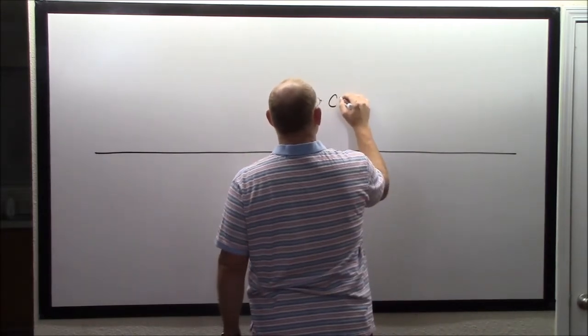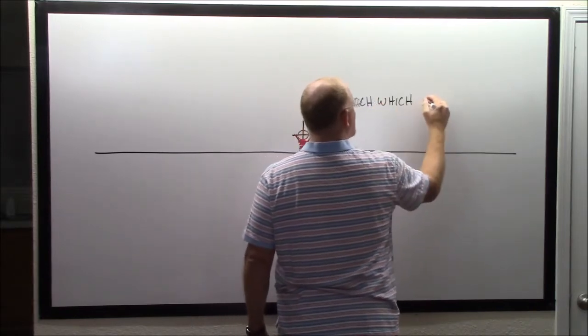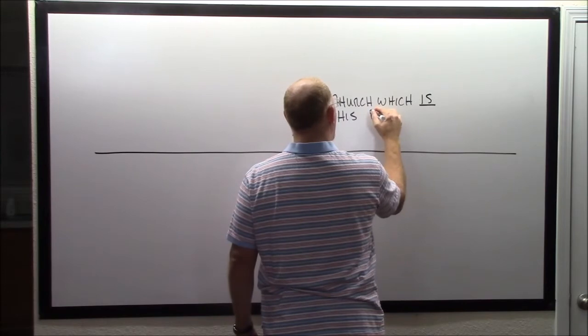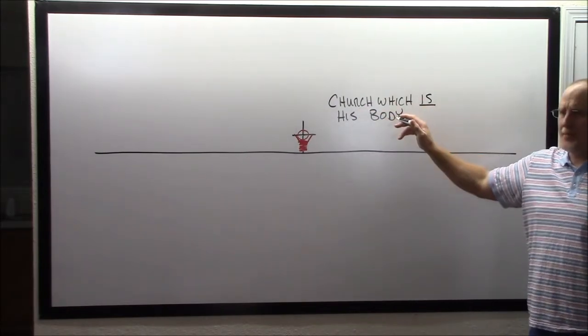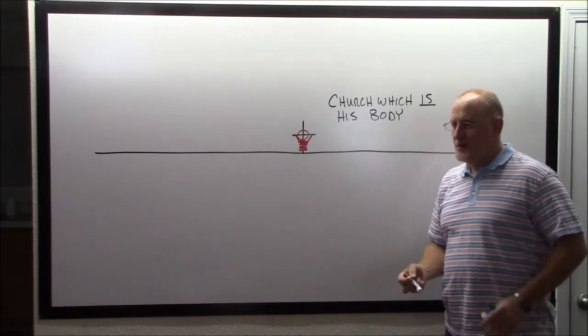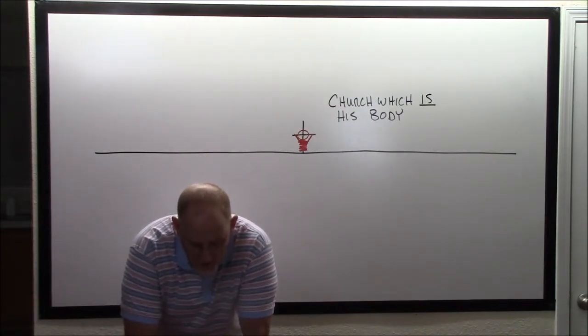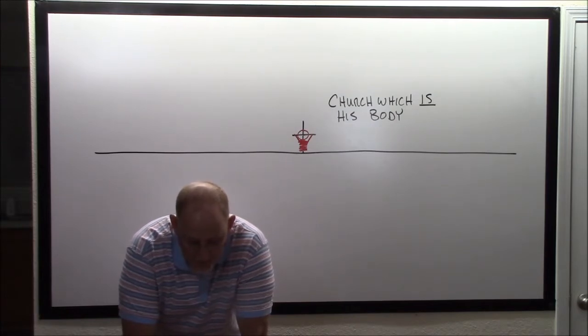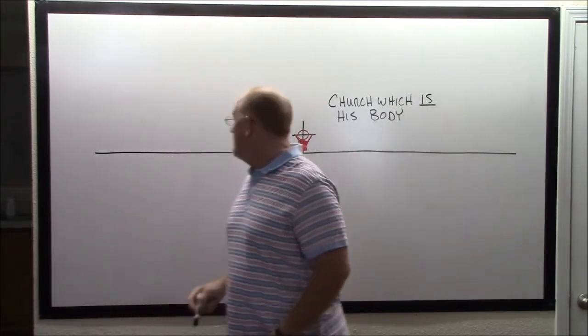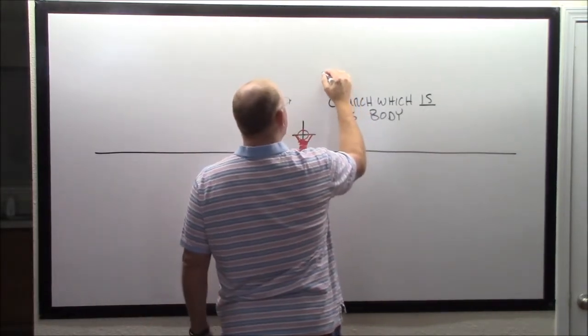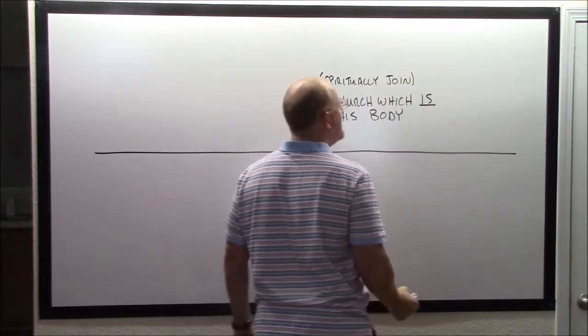Verse 29: No man ever yet hated his own flesh. When does the wife become the flesh, the own flesh of the husband? When they're married. Paul reveals the church is his body. When does the wife and husband become one body? The moment they're joined together, right?